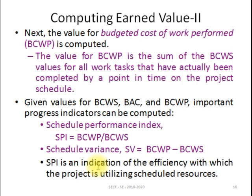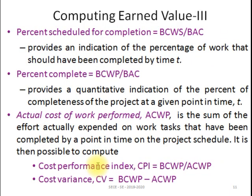SPI is an indication of the efficiency with which the project is utilizing its scheduled resources. If you utilize the scheduled resources properly, you will get an accurate SPI. Next, we calculate the percent scheduled for completion. The percent scheduled for completion is calculated based on BCWS divided by BAC — the Budget at Completion, which is the total summation of all work tasks.